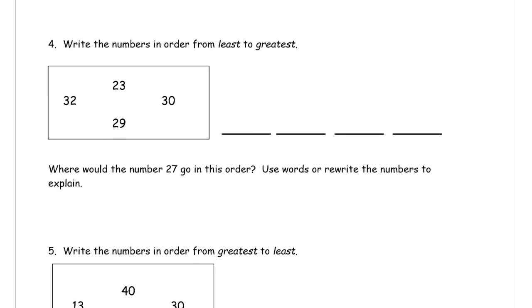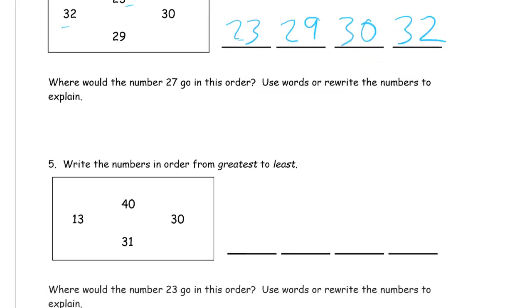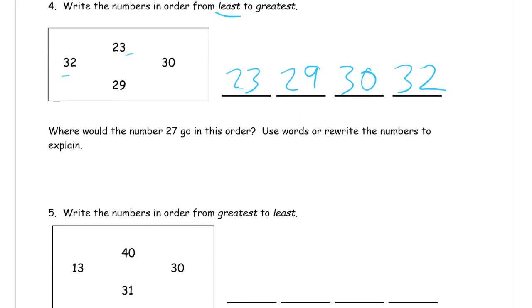Problem 4: Write the numbers in order from least to greatest. So these four numbers, what's the smallest one first? Not the 30s because the 20s are both smaller than those. This is 29 and that's 23, so 23 is less than 29. So 23 and then 29. And then we can do the 30s. 30 would come before 32. Where would the number 27 go in this order? Use words or rewrite the numbers to explain. You could just say it would go in between the 23 and the 29, or you can just rewrite: 23, 27, 29, 30, 32. I'm going to circle the 27.